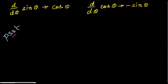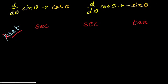Remember the last three letters — S, S, T — and ignore the first one. S is for secant, again S is for secant, and T is for tangent. Now for the second row, take the co-functions of these three trigonometric functions. For secant, take cosecant; again for secant, take cosecant; and for tangent, take cotangent.